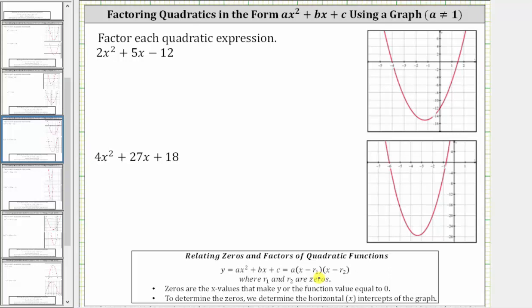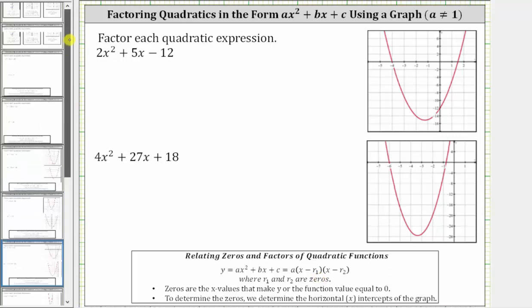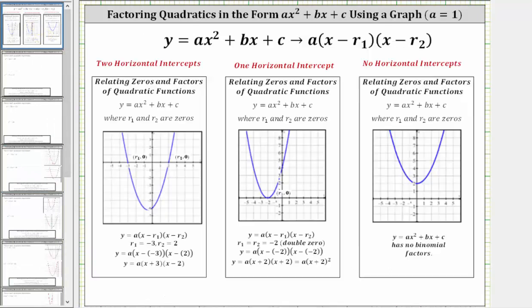When looking for the horizontal intercepts of a quadratic function on the coordinate plane, there are three possible outcomes. We can have two horizontal intercepts, which gives us two distinct binomial factors. Or we can have one horizontal intercept, which we call a double zero, and therefore we let r sub one and r sub two equal negative two, giving us two of the same binomial factors. The third case is we don't have any horizontal intercepts, and therefore we don't have any binomial factors.